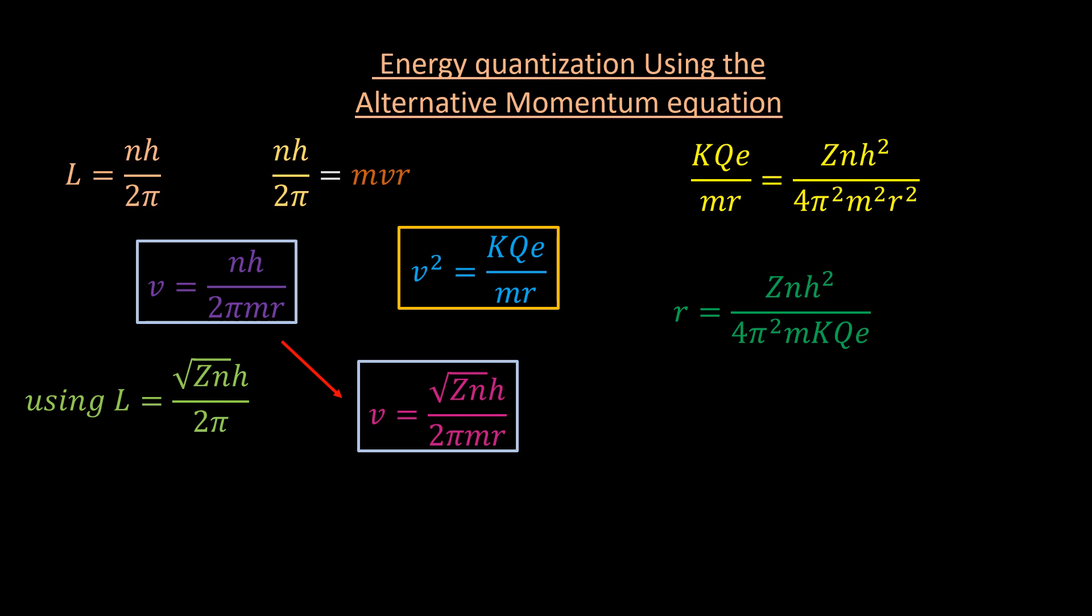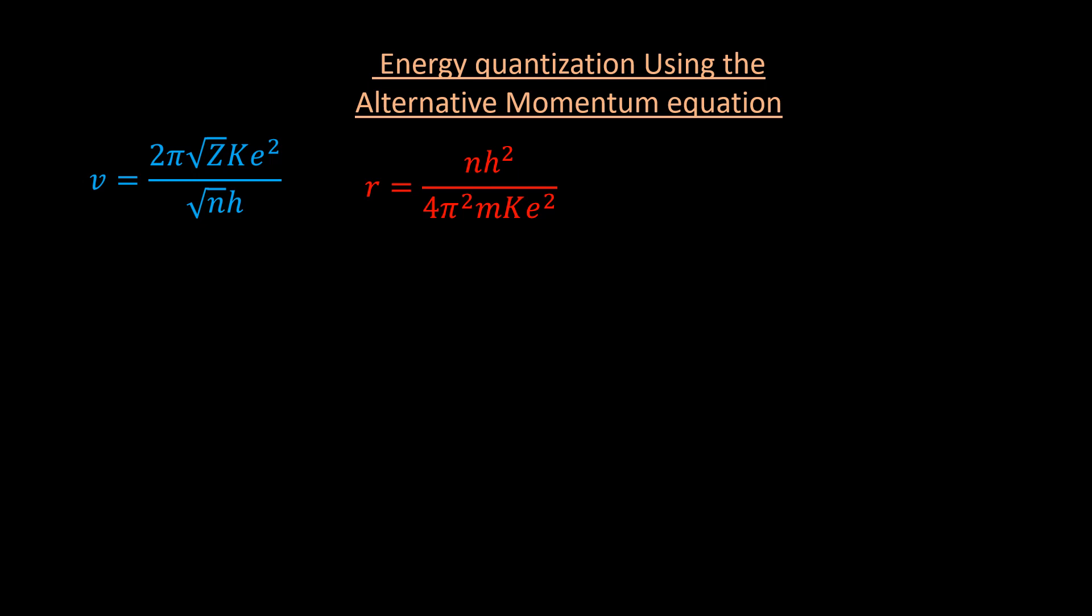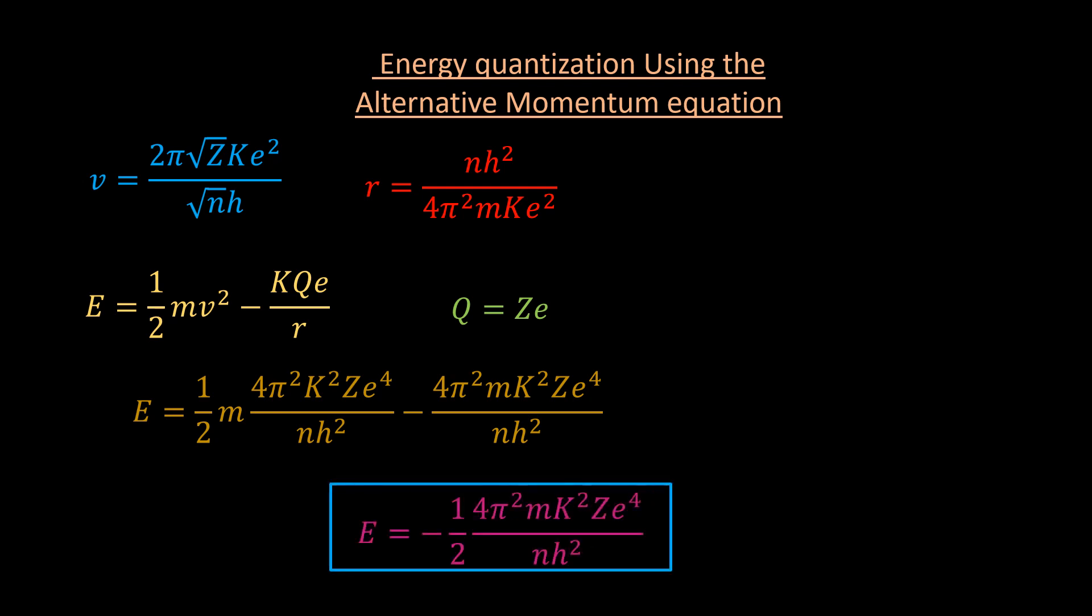As before, we let capital Q be equal to z times e and sub it in this equation to have the following equation. Subbing these into the velocity equation yields the following equation for velocity in terms of z and n. Subbing these expressions in the total energy formula produces the following equation. It essentially has the same form as before. So simplifying just gives half of the potential energy. So we can express this energy as minus z on n times E0, E0 being the same as before and having the value 13.6 electron volt. So we can write E equal to minus 13.6 electron volt times z over n.